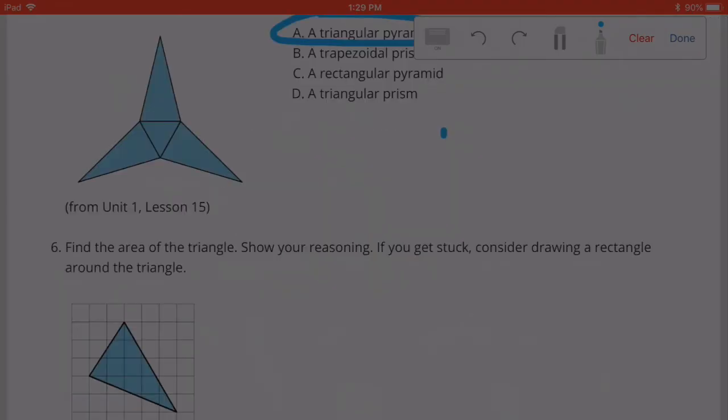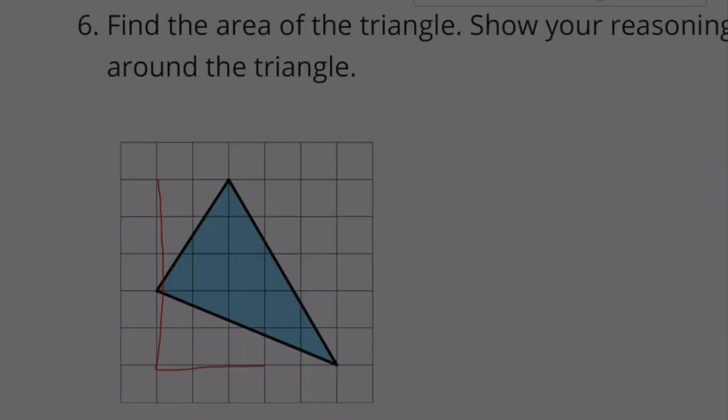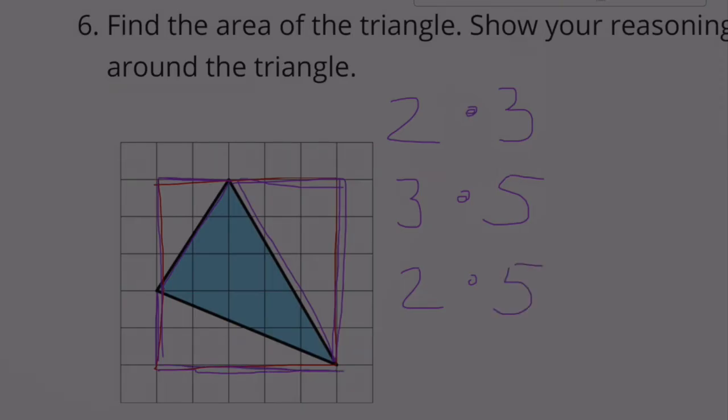Number 6: Find the area of the triangle. Show your reasoning. If you get stuck, consider drawing a rectangle around the triangle. This is a 2 by 3 triangle. This one over here is 3 by 5. This is 2 by 5. So we need to get rid of these triangles.